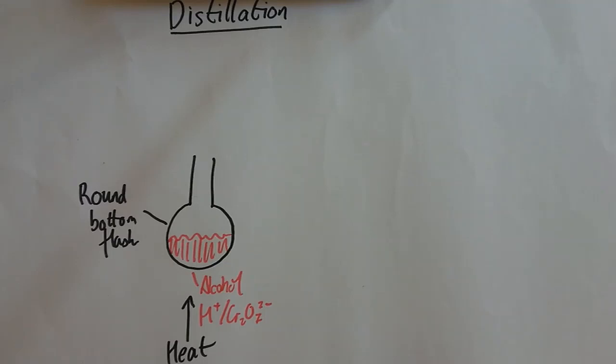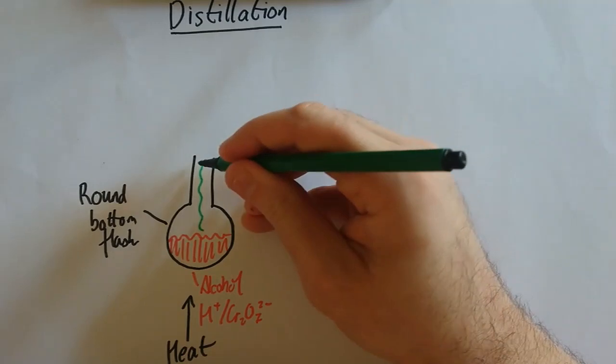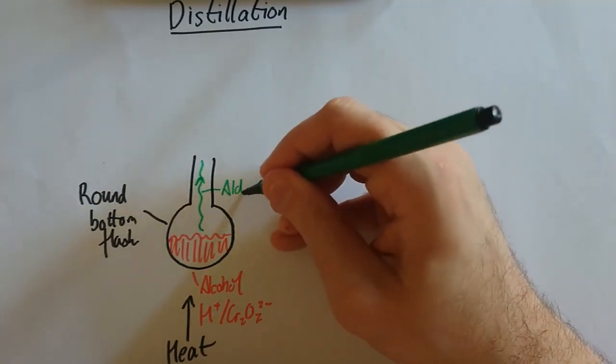Now when we heat it up, the acidified dichromate and the primary alcohol are going to react. When they react, they produce an aldehyde, and we already know that the boiling point of an aldehyde is lower than that of an alcohol because alcohols have hydrogen bonding, aldehydes only have permanent dipole forces between molecules. So if we heat it up to above the boiling point of the aldehyde but below the boiling point of the alcohol, all the aldehyde will evaporate off, and because it's reacted it will now be green. So that's going to be our aldehyde.